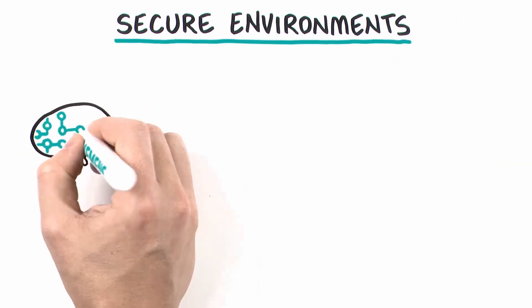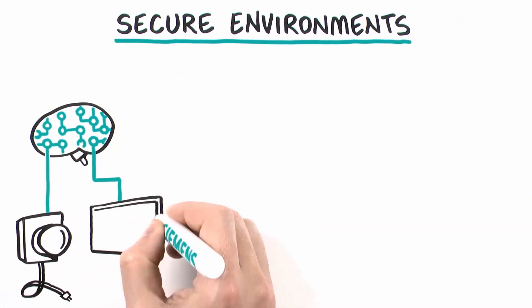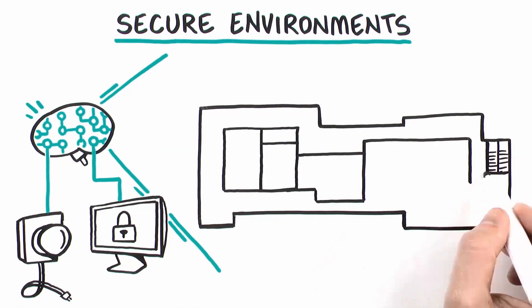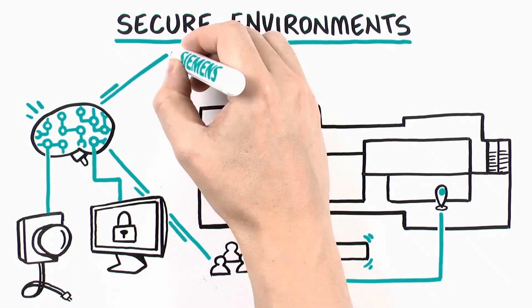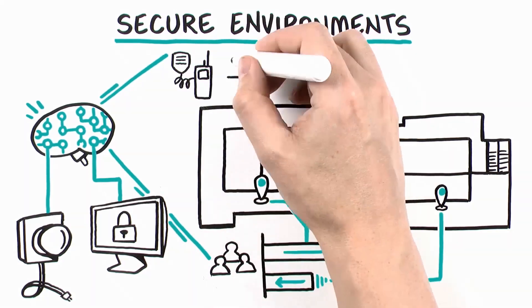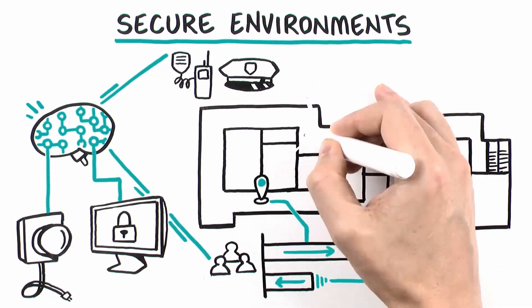An IoT network of smart sensors and security software analyzes the flow patterns of occupants in the building. This information helps you adjust security personnel and procedures to optimize safety and security resources.